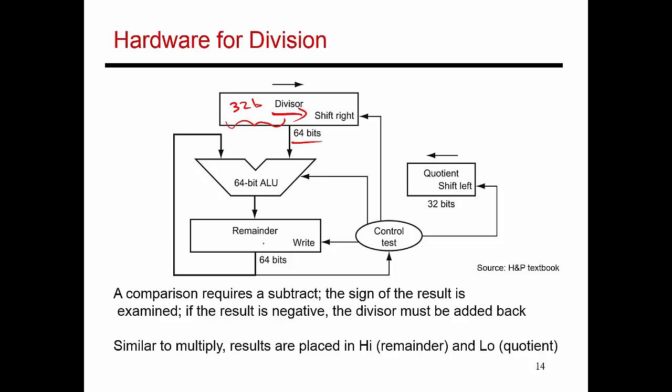The dividend gets placed in the remainder register and gets placed in the least significant bits over here, and it's got a bunch of leading zeros.